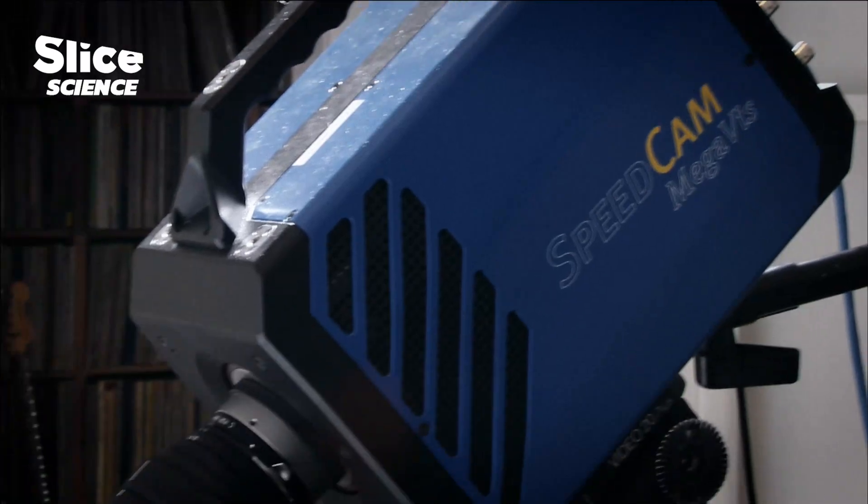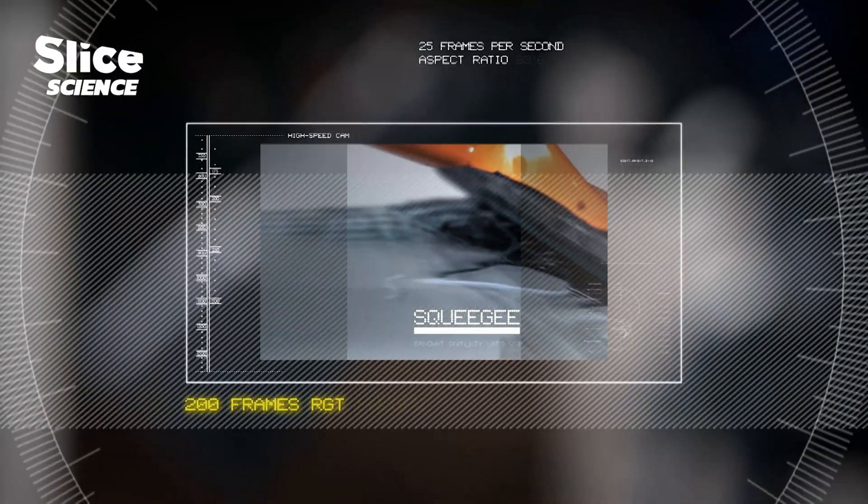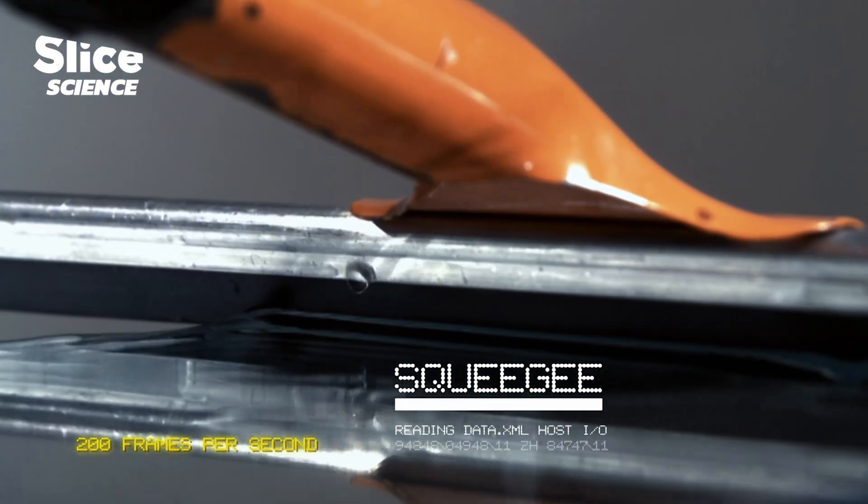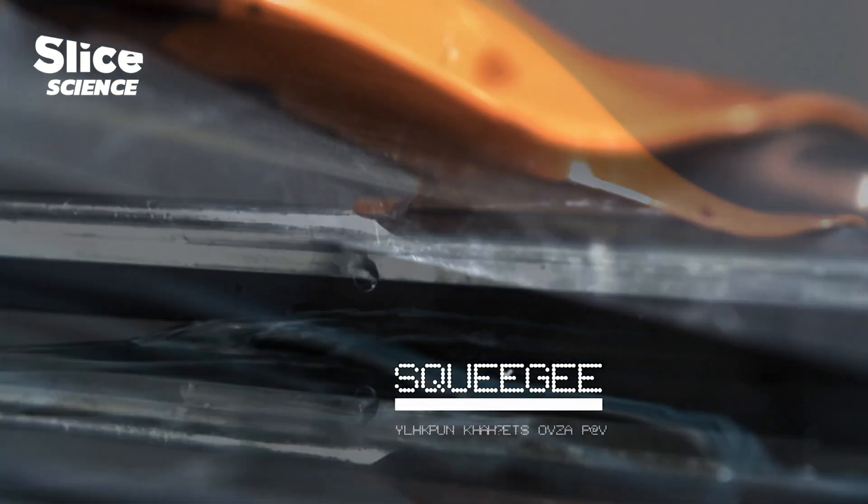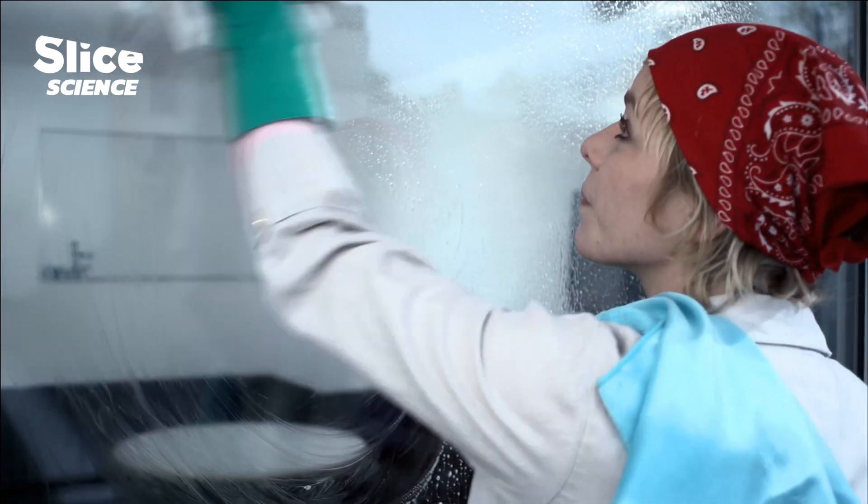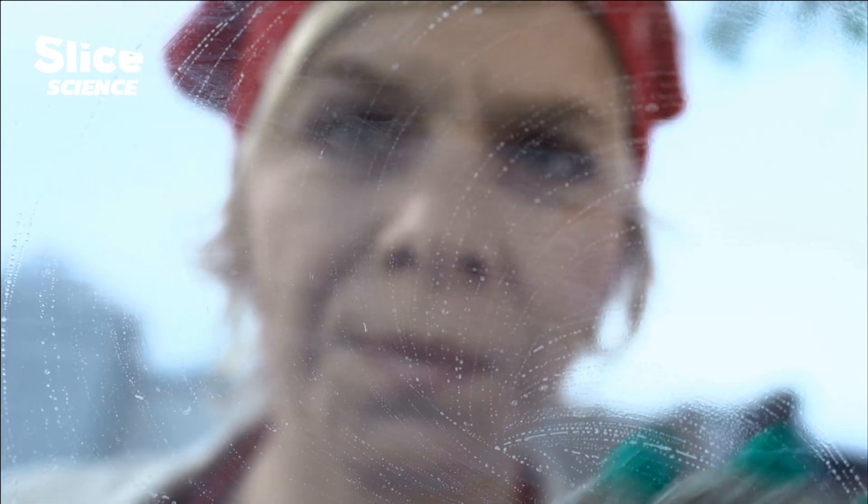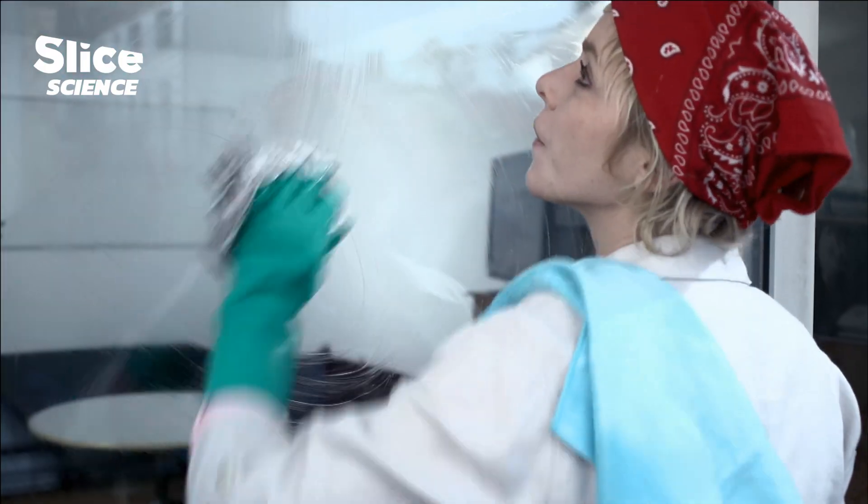A high-speed camera running at 200 frames a second can show the processes in detail. Newspaper is an old household tip for drying windows. It absorbs the last water droplets and is said to give the glass a particular shine.